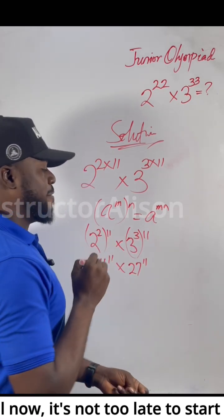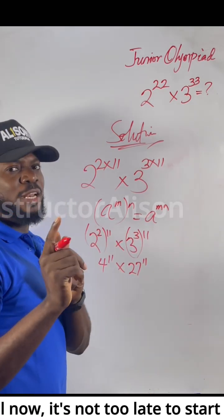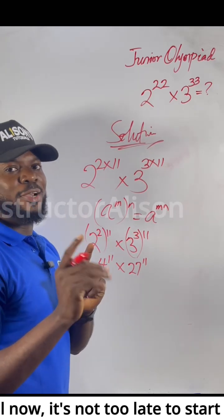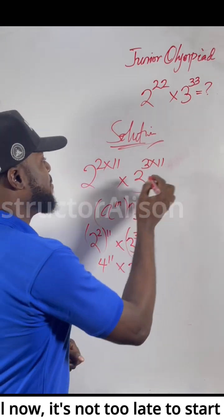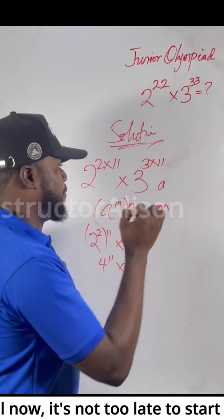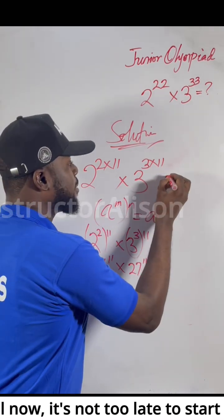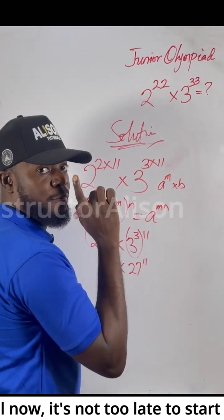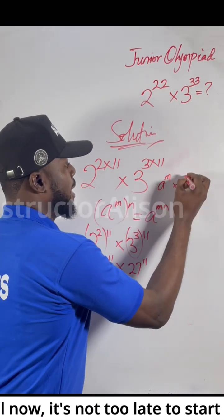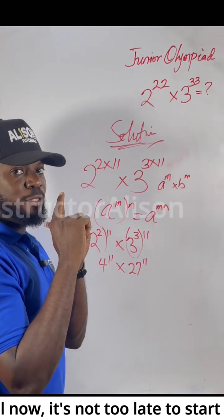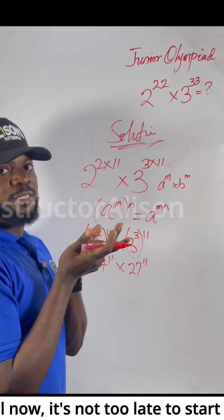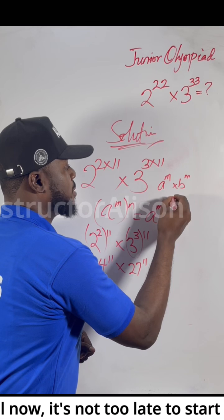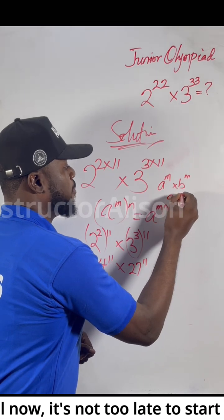Many learners won't know this next step. If you get a to the power of m times b to the power of m — remember the powers are the same but the bases are different — what happens is you multiply the bases and put them in a bracket, then pick one of the powers.